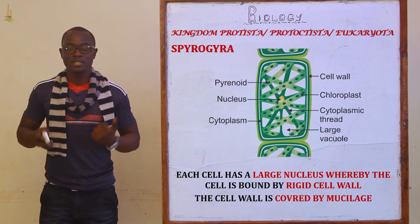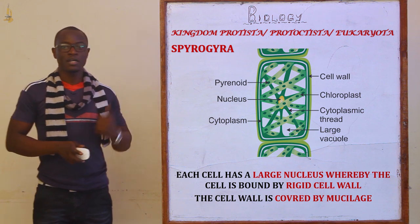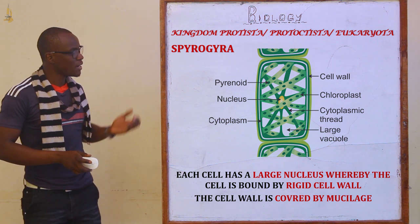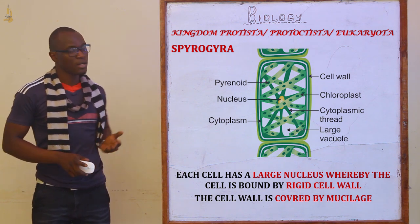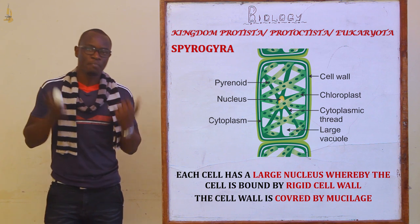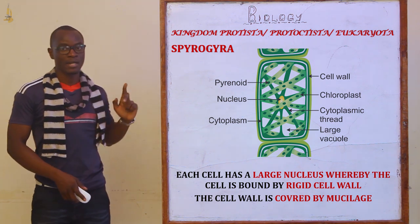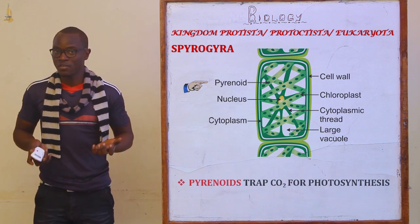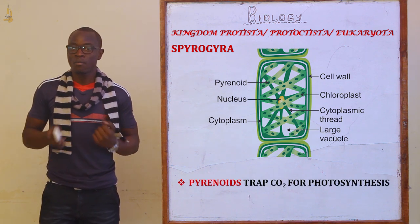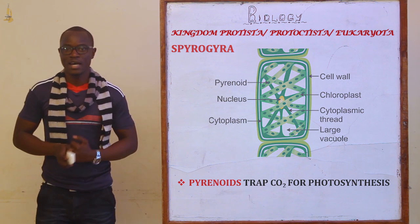The cell wall is basically covered by mucilage. As you can see in the diagram, there is the cytoplasm, the cell wall, the central nucleus, the spiral chloroplast, and also the pyrenoids. The function of the pyrenoids is that they trap the carbon dioxide molecule for the process of photosynthesis in the dark stage.